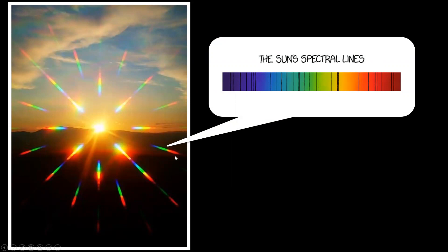and it leads to a diffraction effect rather than a refraction effect like we had for the prism. So diffraction leads to a ROYGBIV color spectrum like this, and if you zoom in on it, on the spectrum of the sun in particular, you'll see that it has missing lines. Those dark lines are somewhat mysterious until you look closely at them and you realize it's telling us something about what the sun is made out of.